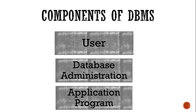And at last comes the application program. What does an application program do? It is any program designed to perform a specific function directly for the user, or for another application program or operating system. Like MS Access is there. So students, I hope that you have understood about the components of DBMS, where DBMS is used, and what DBMS is.